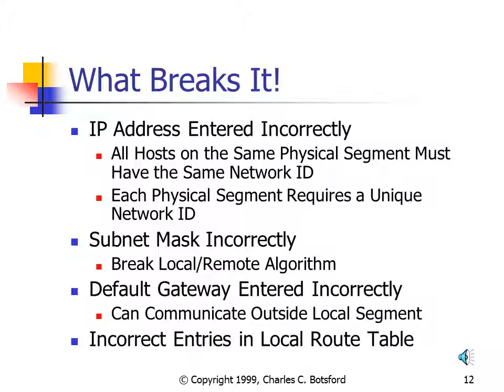Also, if the default gateway is entered incorrectly, you may have local communications — able to communicate on your own segment — but you will not be able to communicate on another segment. Incorrect entries in your routing table, though less common, could also make communication fail.